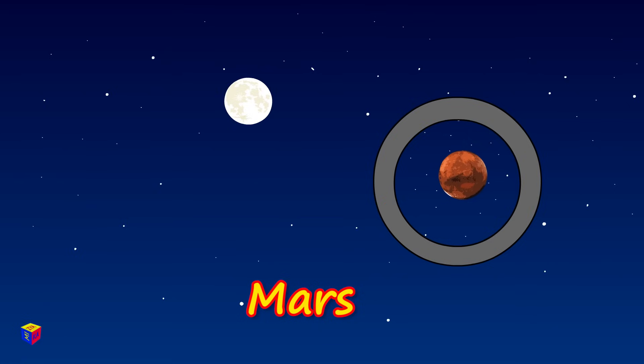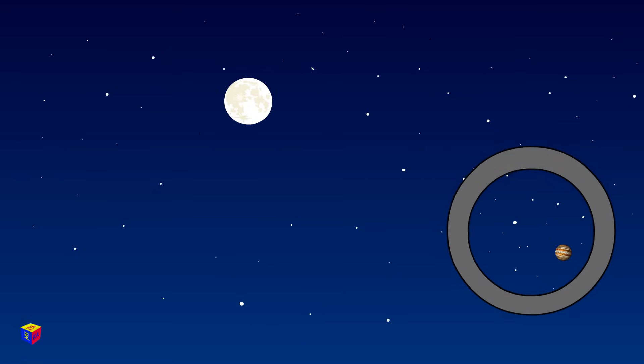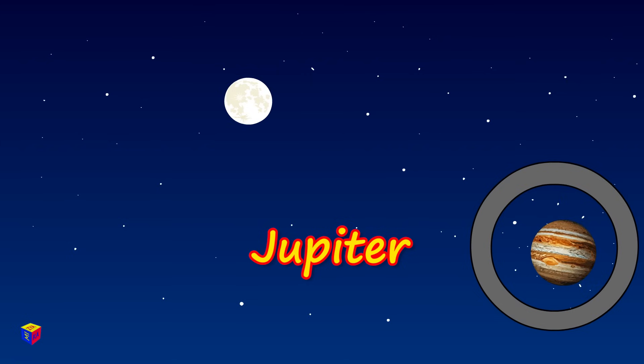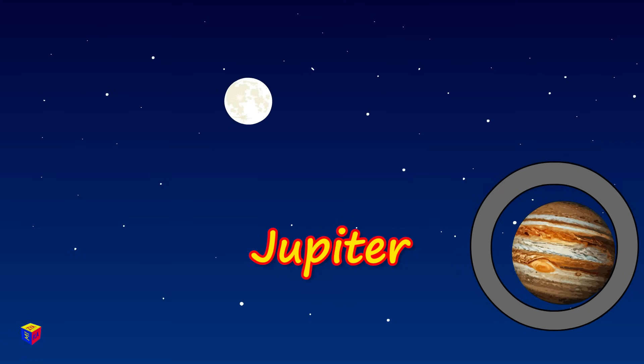Mars. This planet is easily recognized by its reddish color. Jupiter, the largest planet of the solar system. Jupiter is known for its great red spot.